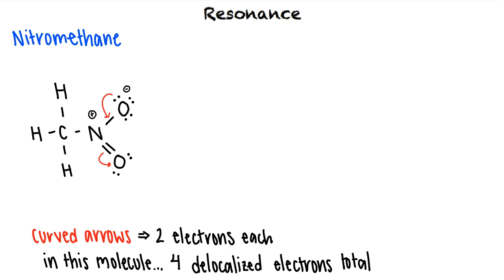If we draw the second structure, we see that there are two possible resonance contributors for the molecule. To properly identify these as resonance contributors, we draw resonance arrows between the structures and brackets around them.